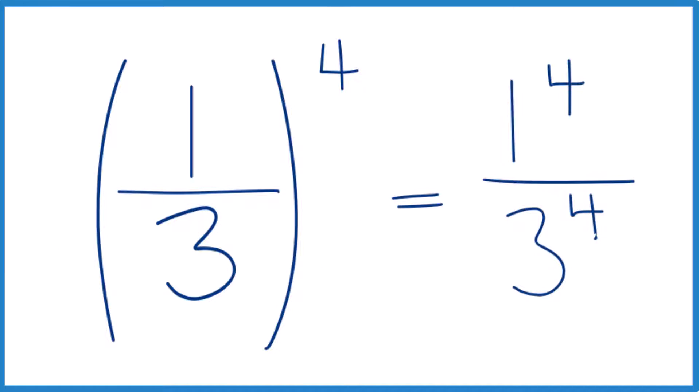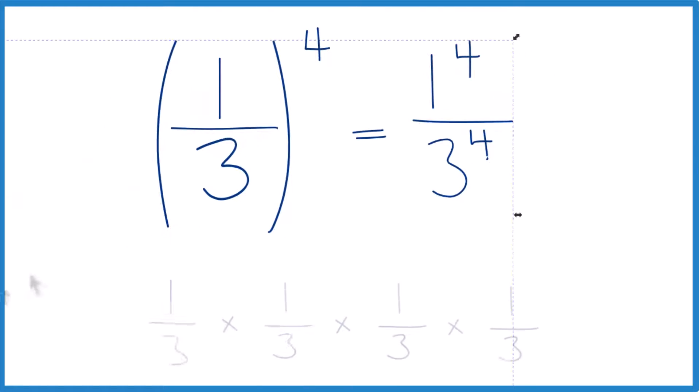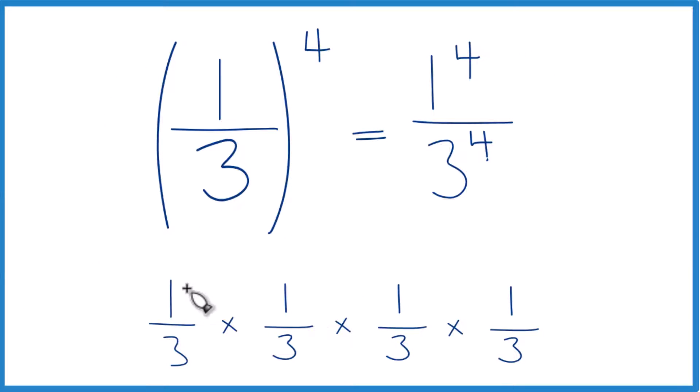Because if you think about this, it's one-third times one-third times one-third times one-third. That's one-third to the fourth. And if we wrote that out like this, we'd have 1 times 1 times 1 times 1, that's 1 to the fourth.